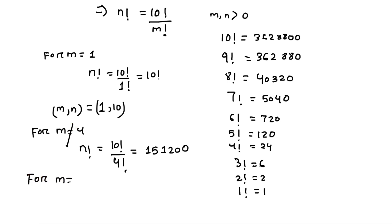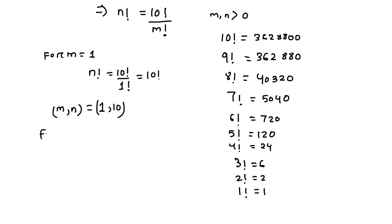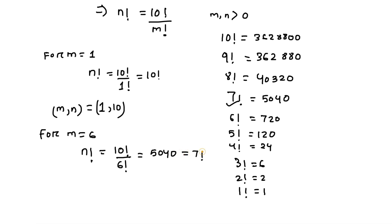For m equals to 6, n factorial equals 10 factorial divided by 6 factorial, and here we are getting 5,040. You can see that 7 factorial is equal to 5,040, so this equals 7 factorial — a perfect factorial value. So m equals to 6 is a valid answer, giving us m comma n equals to 6 comma 7.